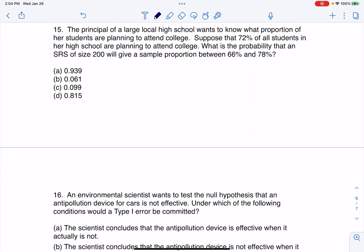Hey everyone, let's take a look at number 15. The principal of a large local high school wants to know what proportion of her students are planning to attend college. Right out the gate I see the word proportion. Suppose that 72% of all students in her high school are planning to attend. So there's my parameter, and I know it's parameter because it says all.